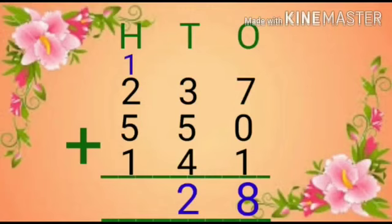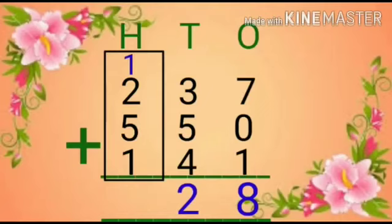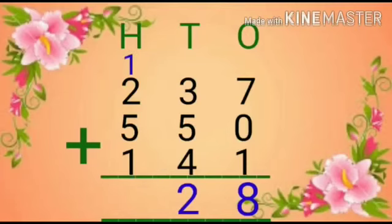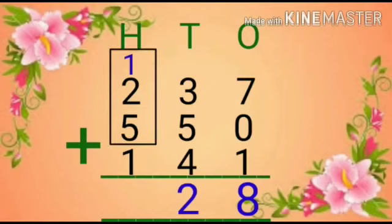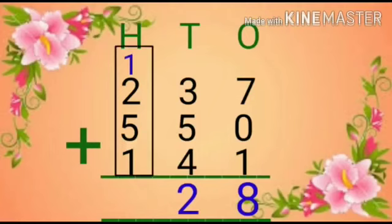Now we will add the digits at hundred's place. There are four digits: 1, 2, 5, and again 1. First we will add 1 and 2. One plus two: three. Then we will add 3 plus 5. Three in my mind and five fingers up will come eight. And eight plus one: nine.